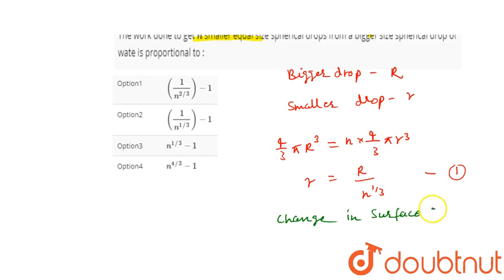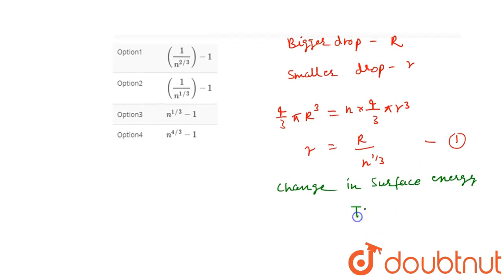This formula we know: surface tension T into delta A. It is called the change in surface energy.